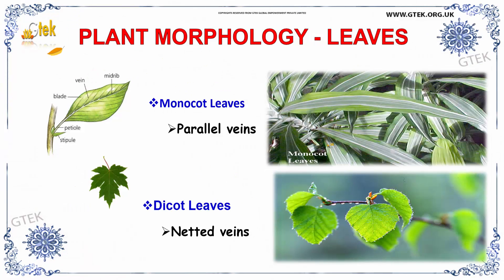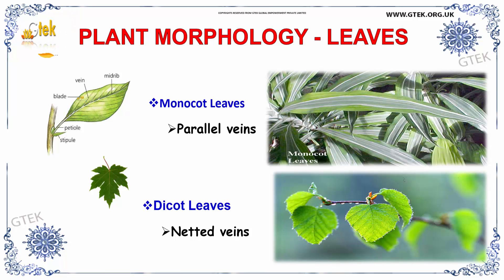Now we are going to see about leaves. Leaves can be divided into monocot leaves and dicot leaves. The monocot leaves have parallel veins — you can see the parallel veins here. Whereas the dicot leaves have netted veins. The center point is the midrib, and in between the veins it is called blade. Here the petiole. This is called stipule.